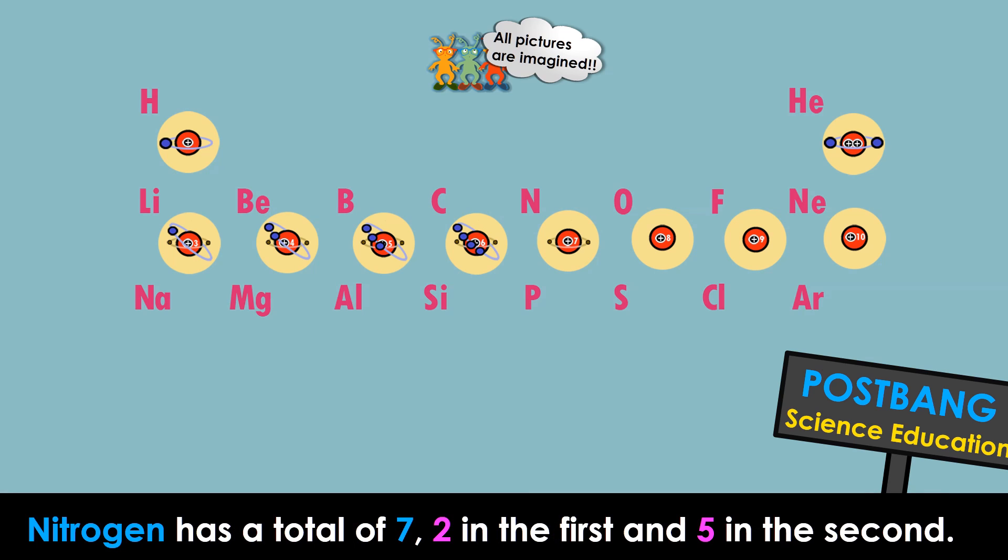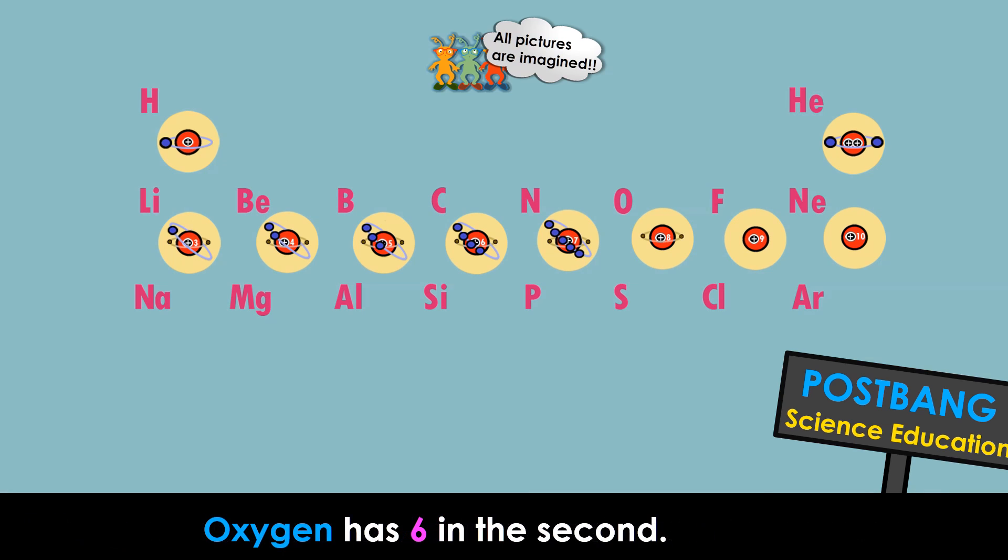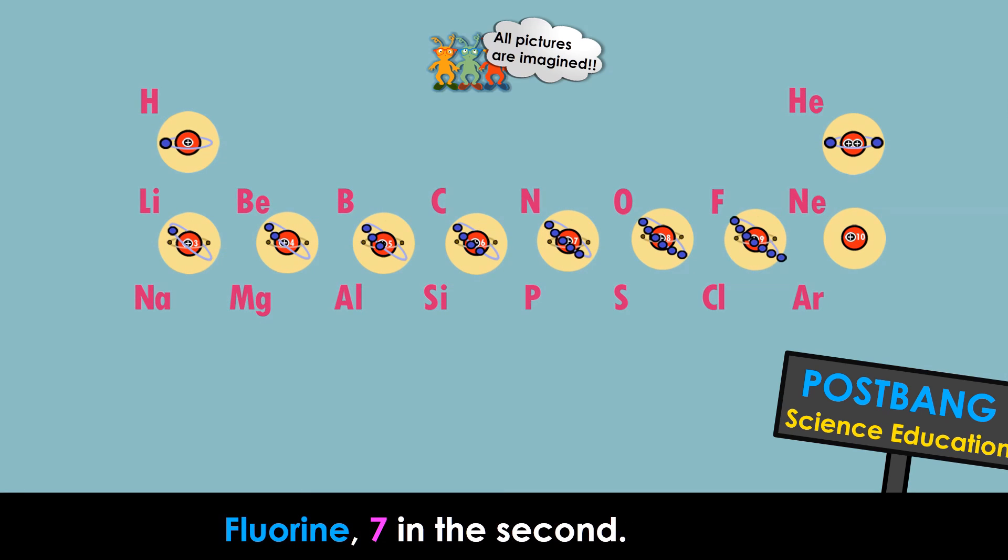Nitrogen has a total of seven, two in the first and five in the second. Oxygen has six in the second. Fluorine, seven in the second. Neon, eight in the second.